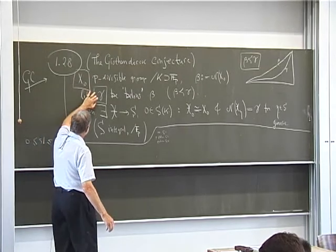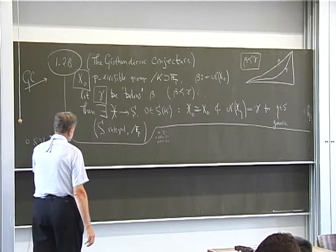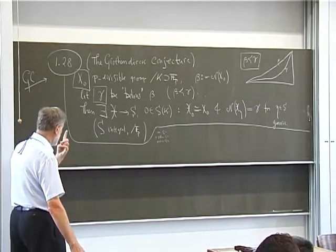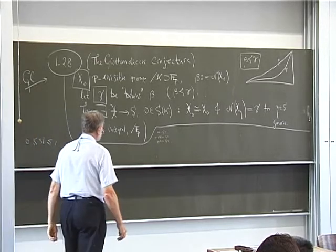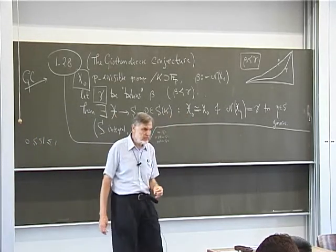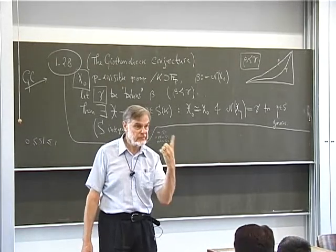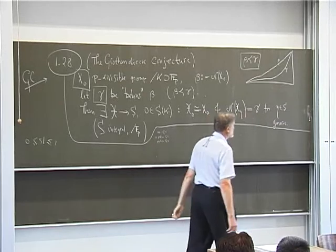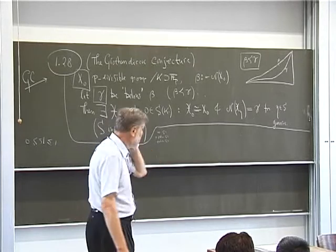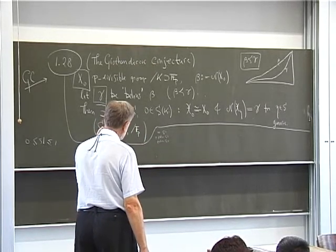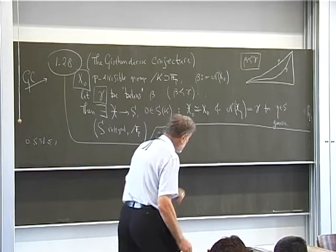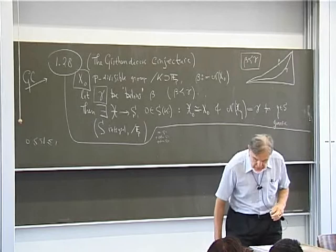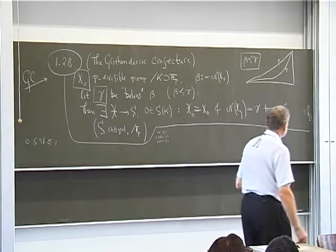We have given x_0 and gamma. The result is there exists a p-divisible group over an integral base in characteristic p, a k-point on it, such that the fiber of the p-divisible group at 0 is the given one, and the fiber at the generic point has Newton polygon equal to gamma. Now let me explain a few notions — I'll do that for the next ten minutes and then in the last 15 minutes prove at least one theorem.